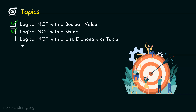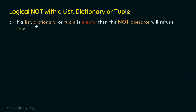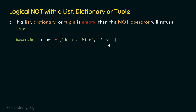Now let's move on to the next topic: logical not with a list, dictionary, or tuple. If a list, dictionary, or tuple is empty, then the not operator will return true — just like with a string. For example, let's consider the list of names: john, mike, and sarah. I have created this list and the names variable is pointing to this list.